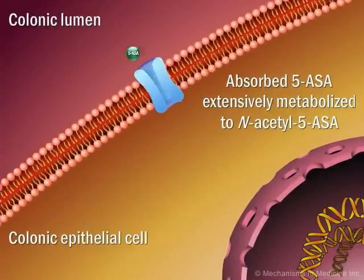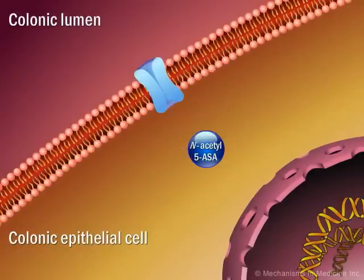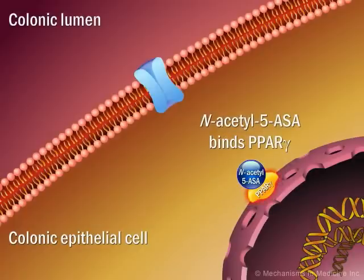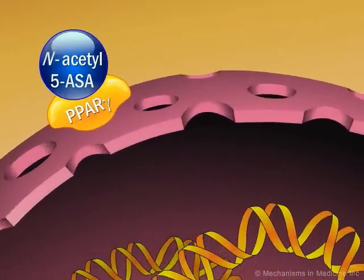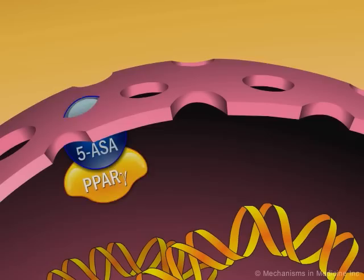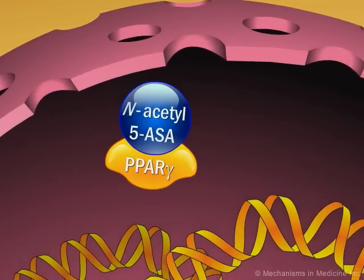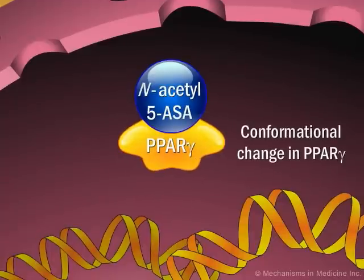Absorbed 5-ASA is extensively metabolized to N-acetyl-5-ASA by N-acetyltransferase-1, or NAT-1. N-acetyl-5-ASA then binds PPAR-gamma, or peroxisome proliferator-activated receptor gamma, a nuclear hormone receptor. Binding of N-acetyl-5-ASA induces the translocation of PPAR-gamma from the cytoplasm to the cell nucleus and a conformational change in PPAR-gamma.